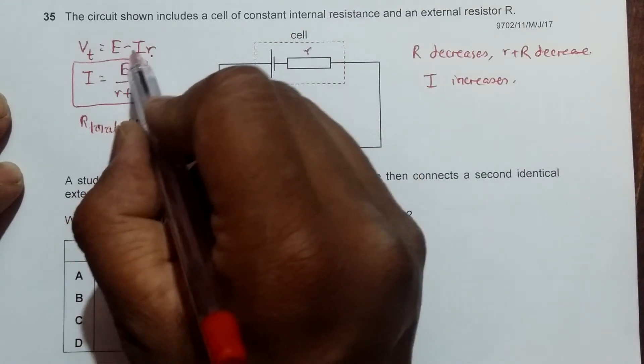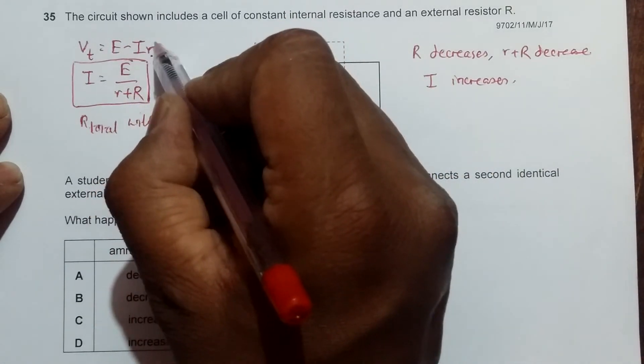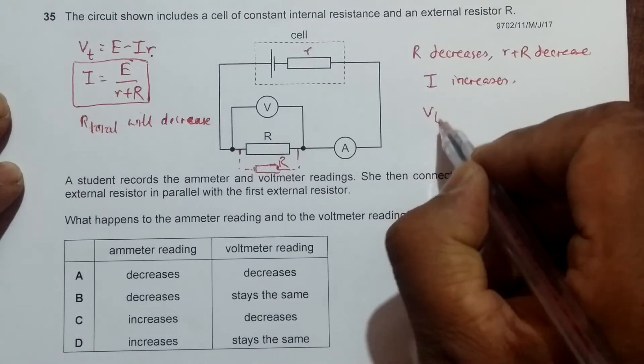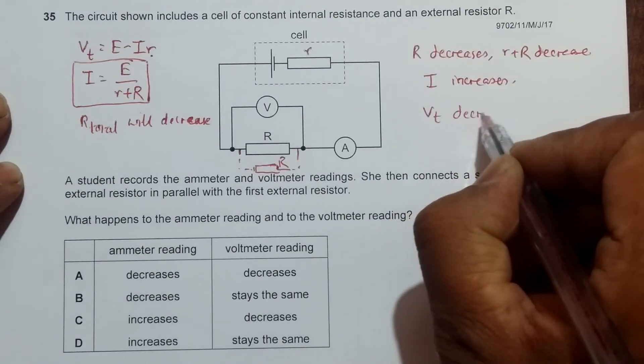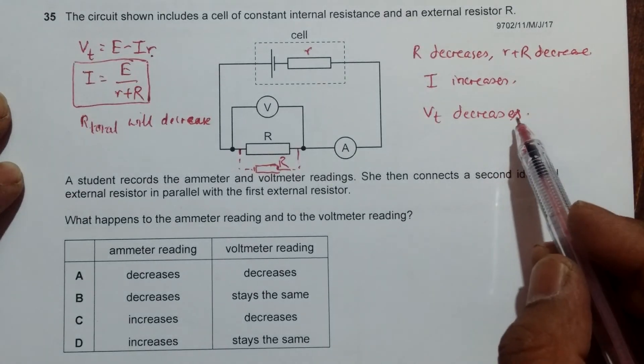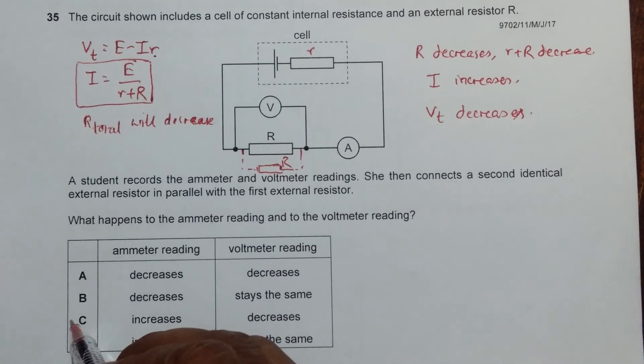Wait, sorry - if I increases, this whole quantity should increase. That's why VT should be decreasing. So VT decreases, and this will be given by choice C.